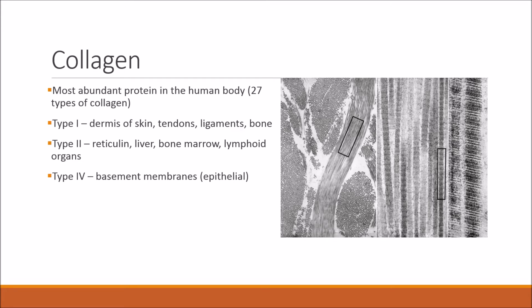Type 2 collagen can be found in the reticulant, liver, bone marrow, and lymphoid organs. Type 4 collagen can be found in the basement membranes of epithelial tissue.